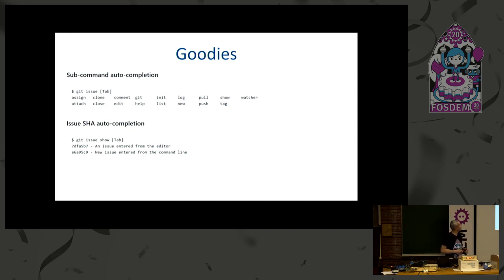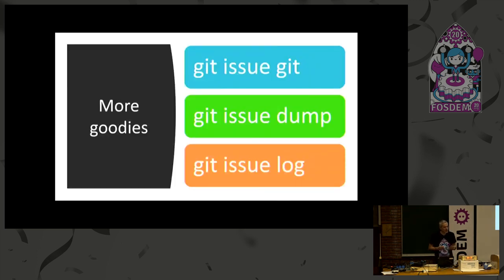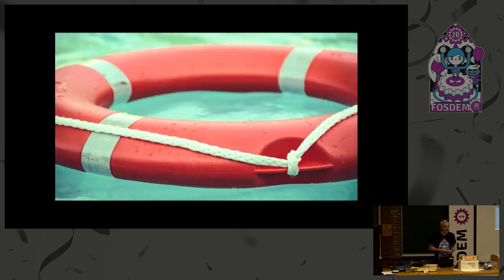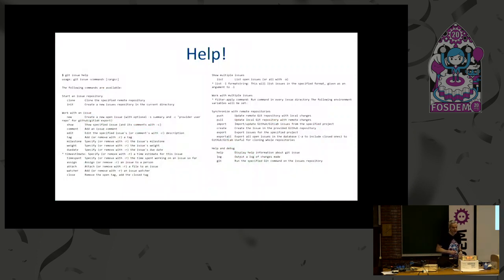You also get some goodies: subcommand auto-completion and SHA auto-completion. You can use the Git commands that you love and know — for example, rebase — to directly change things. Every change you make is recorded as a Git commit. You can dump an issue in JSON format to process it another way. And there is a log of the issues. For help, there is a list of all the commands available, automatically generated from the source code so it's always complete, and a nine-page proper Unix manual page.